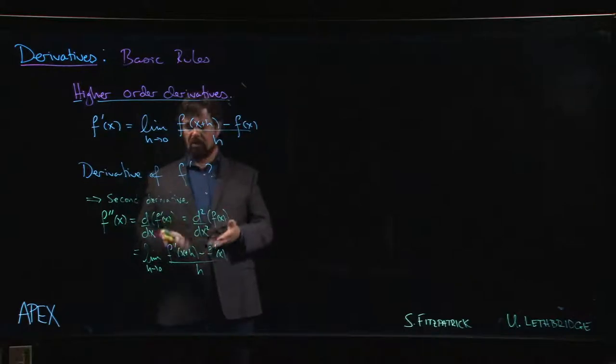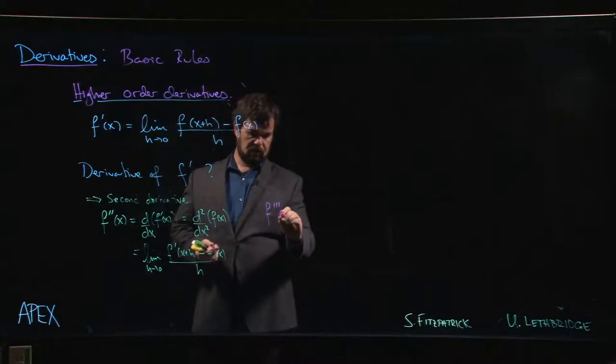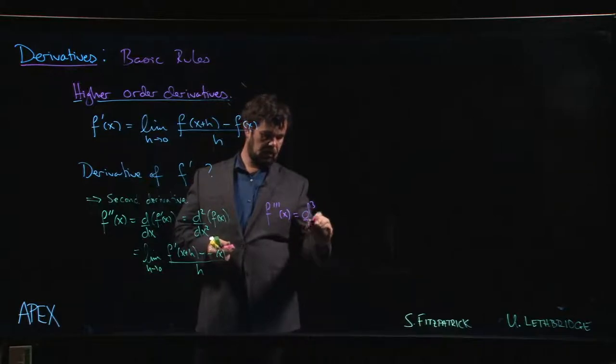So this is kind of the basic definition for the second derivative, notation that you might see, and as I said you can go on to third order and higher. So you can do f triple prime, which we would also write like this: d cubed y dx cubed of f of x.